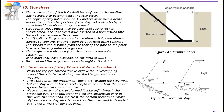Termination of stay wire to pole or crosshead. Wrap the top preformed make-off without overlapping around the pole twice at the prescribed height with ends meeting. Twist the top of the preformed make-off around the stay wire. Cut the stay wire at the correct length to ensure that the proper spread-height ratio is maintained. Place the bottom of the preformed make-off through the crosshead eye, then pull tight and cut the suspension wire in line with the crosshead, and twist the bottom preformed make-off around the stay wire. Ensure that the crosshead is threaded to the outermost of the stay rod.